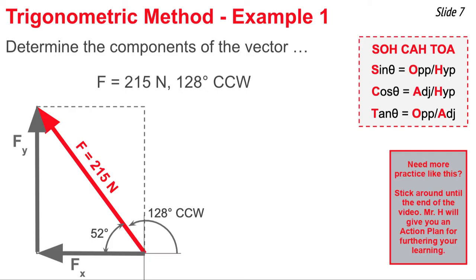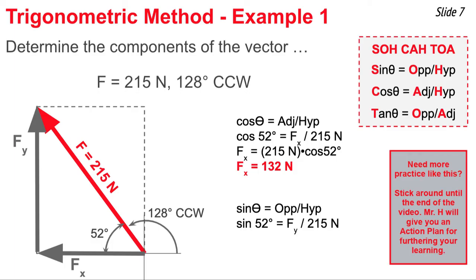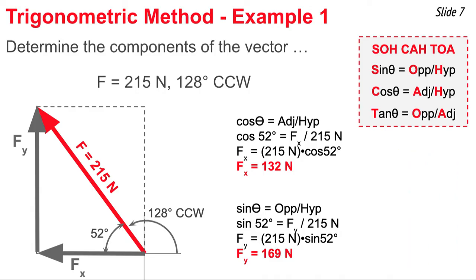They are the side adjacent and the side opposite of the angle 52 degrees. I'm going to use cosine of 52 degrees to relate the adjacent side to the hypotenuse of 215 newtons. The adjacent side is fx and the hypotenuse is 215 newtons, so I set up my cosine function as shown. Then I multiply both sides of the equation by 215 newtons and use my calculator to determine the value of fx. It comes out to be 132 newtons. Now for fy — that's the side opposite 52 degrees — so I'm going to use the sine function. Sine of 52 equals fy divided by 215 newtons. I do my algebra and pull out my calculator, and it comes out to be 169 newtons.